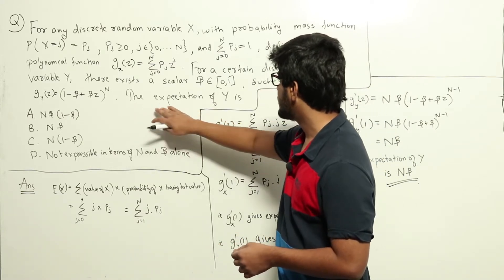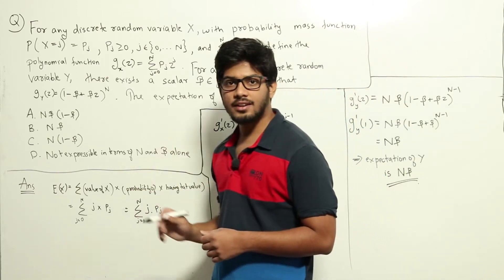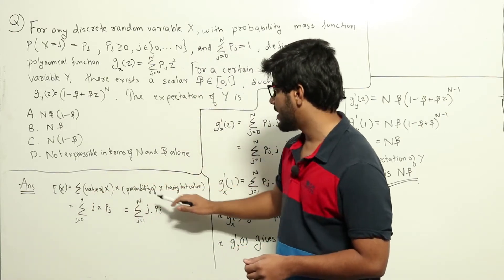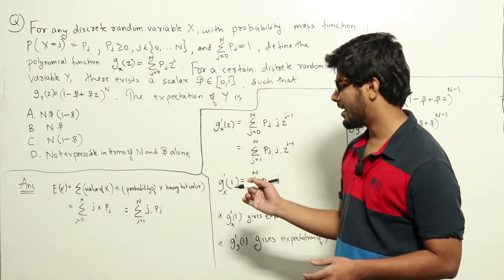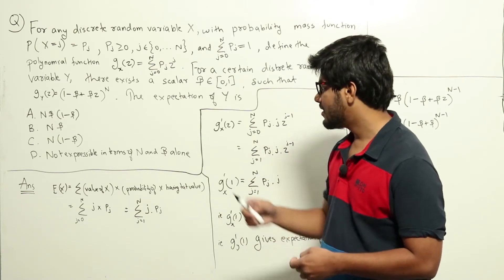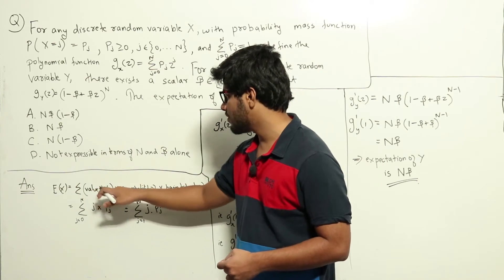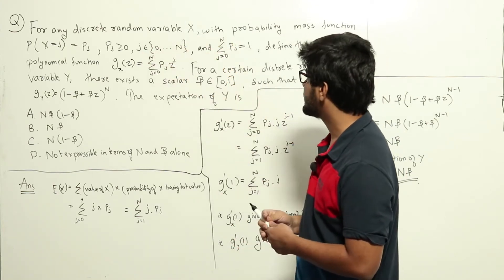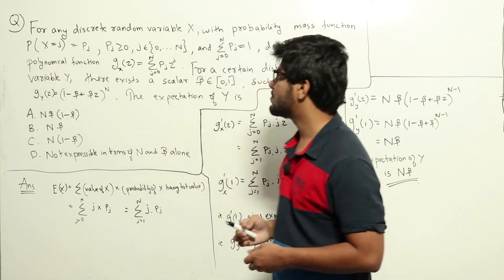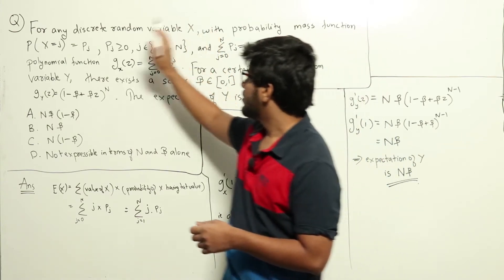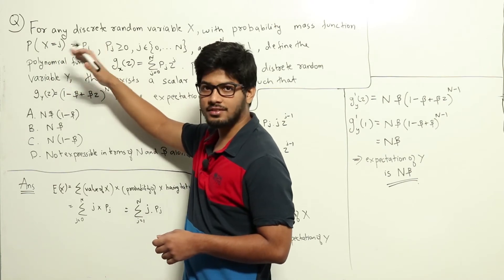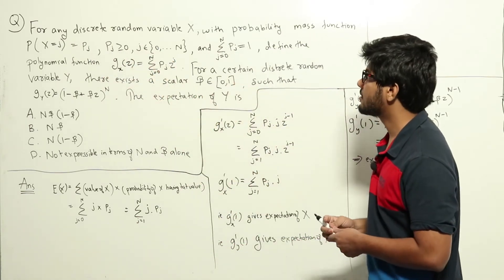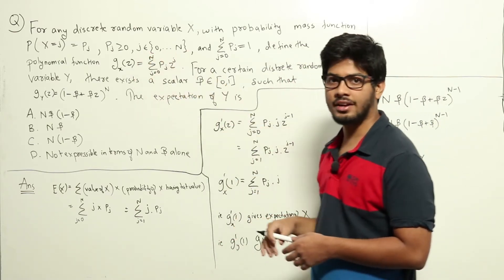The question asks us to find the expectation of y. For any random variable x, the expectation of x equals the sum of all values of x times their probability. It's given that p(x = j) = p(j), meaning for x to equal j, the probability is p(j), where p(j) ≥ 0 and j belongs to 0 up to n.